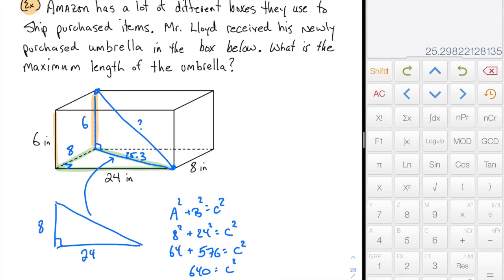So now I'm going to erase some of the stuff that I don't need anymore. I'm going to erase this highlighting, this highlighting, this highlighting. And I'm going to look at the interior triangle, this one right here.